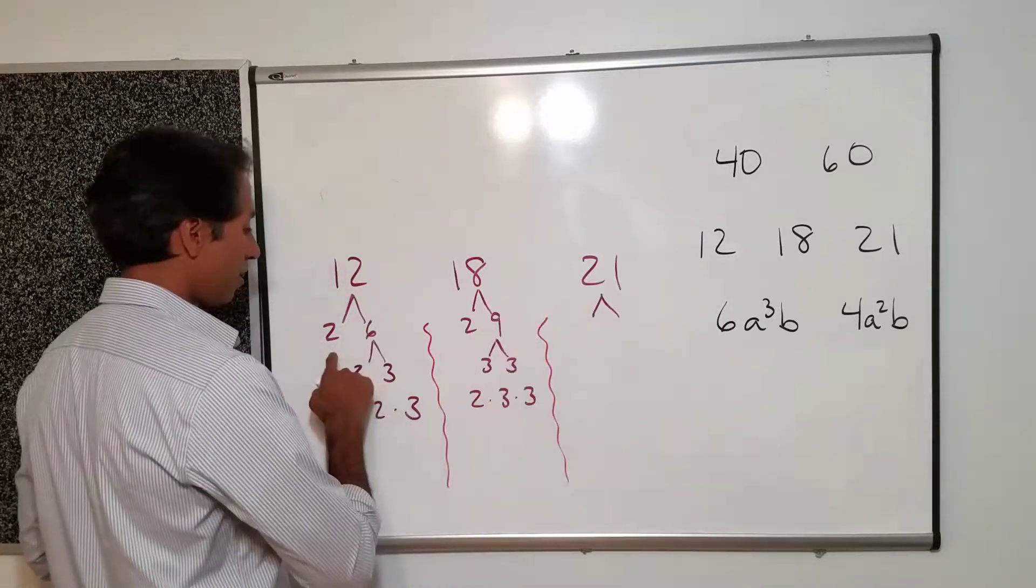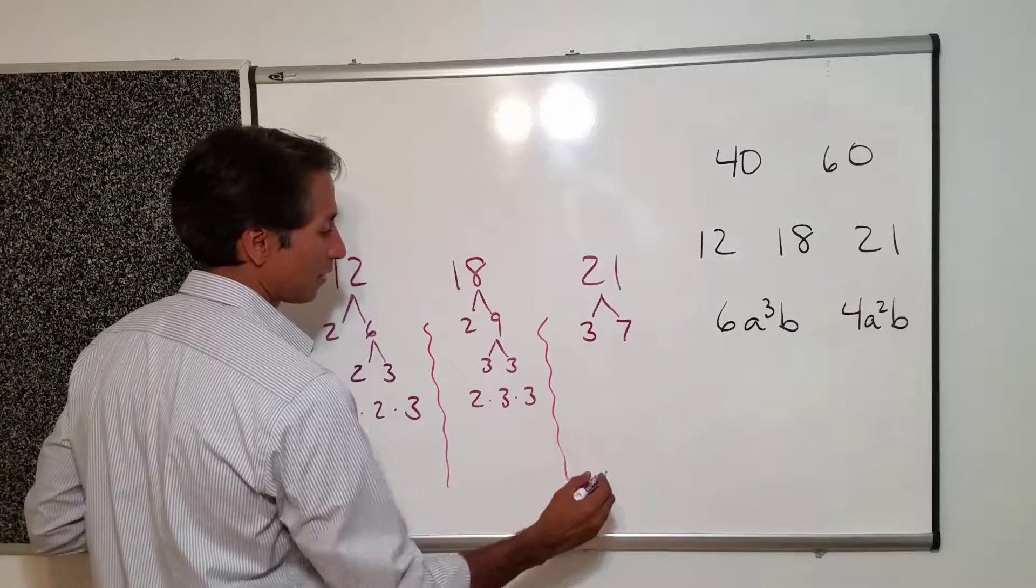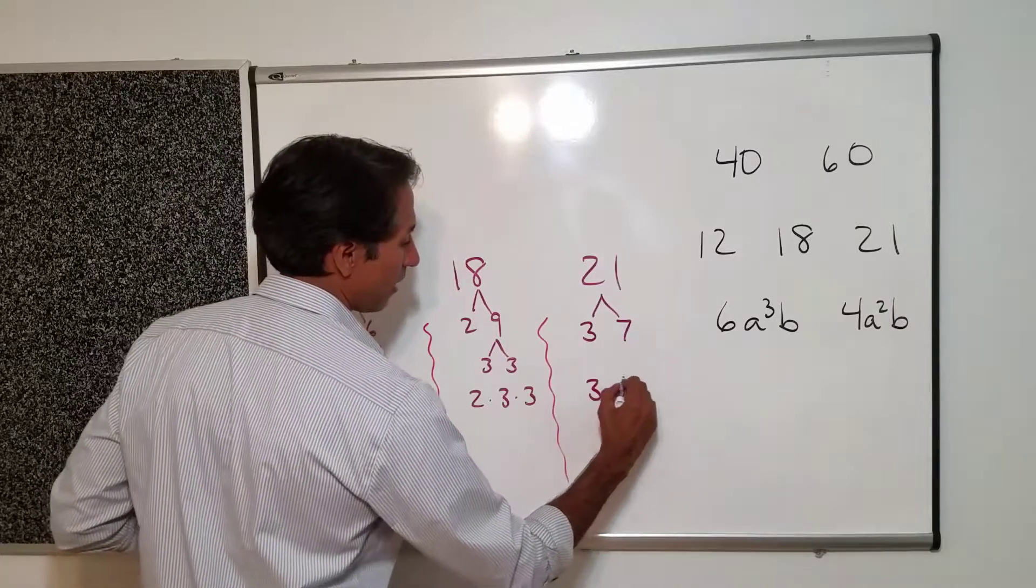I can't divide by two. Oh. But I can divide by three. And that's just a seven. So I have a three and a seven.